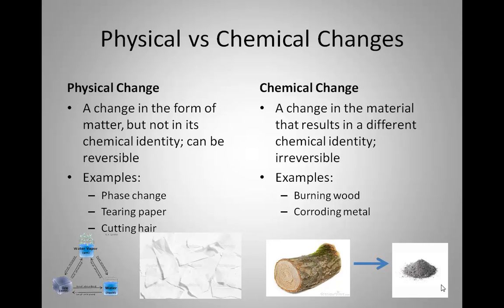Another example: metal corrodes. Remember, corrosion is not the same as erosion — erosion, like where the ocean eats away at a rock, still leaves you with bits of rock. Corrosion is like when you leave batteries in something too long and open it up to find that white crusty stuff — the acid has been leaking and corroding the metal around it. Or if you bake a cake: you start with raw eggs, flour, sugar, oil, and milk, bake it, and it turns into something delicious. But it has totally changed, and you can't unbake that cake.